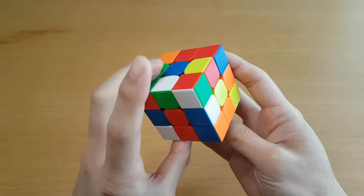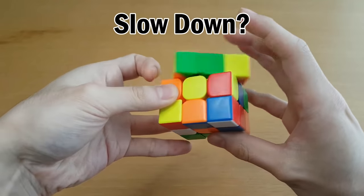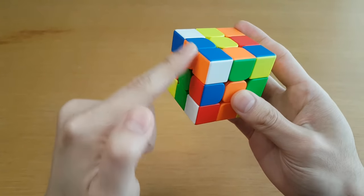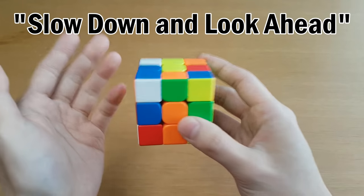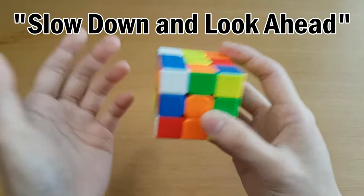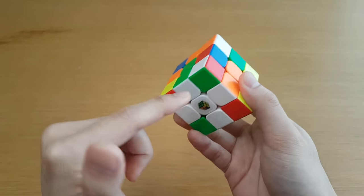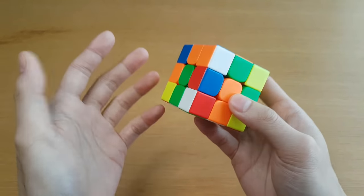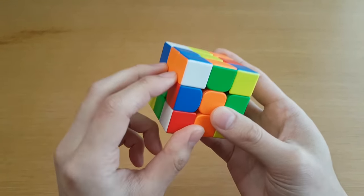Now, some of you advanced solvers out there might be wondering if it's ever worth it to slow down your cross solution so that you can watch where the pieces go and more easily find your first pair during your cross. Slow down and look ahead can be good advice for later in the solve. But during the cross, there's no need because at the highest level when you don't want to pause, you will be predicting the first pair during inspection anyway.